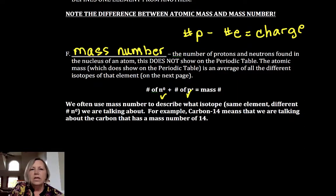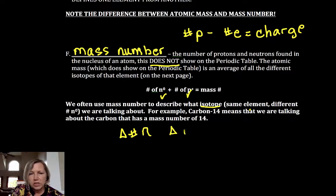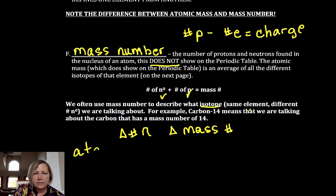The mass number does not show up on the periodic table. We have things called isotopes that have a different number of neutrons. If we change the number of neutrons, that's going to change the mass number.